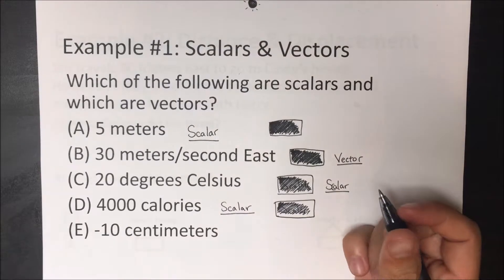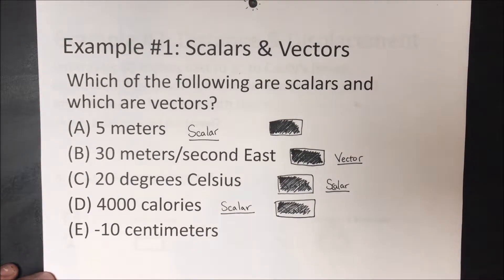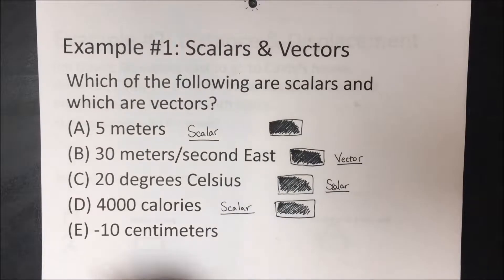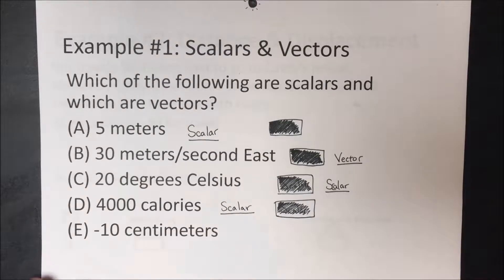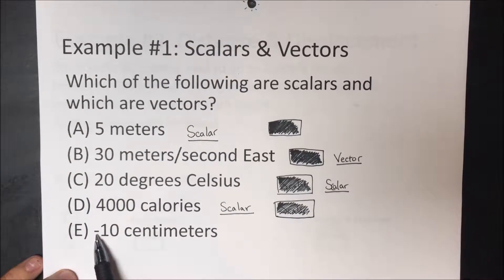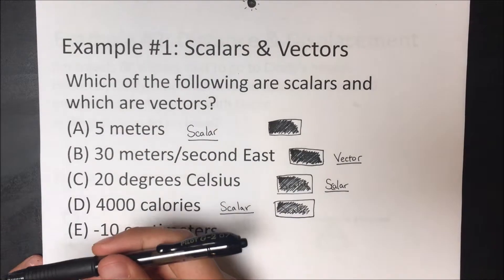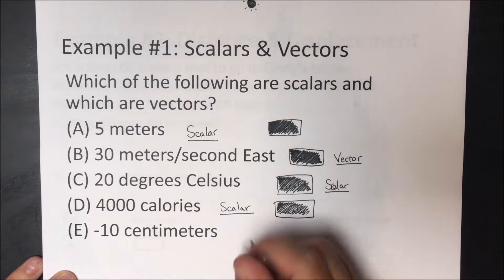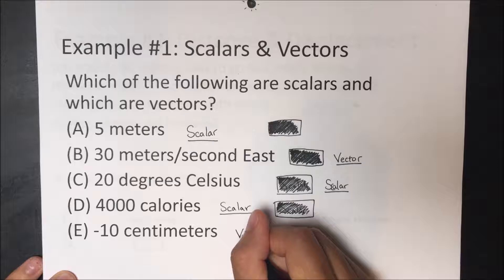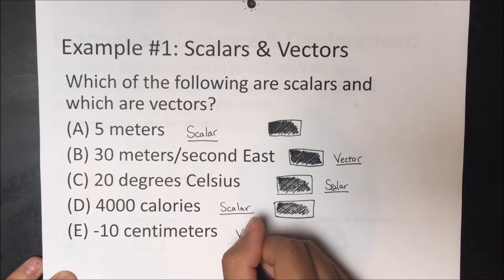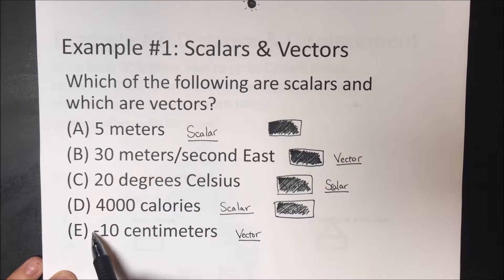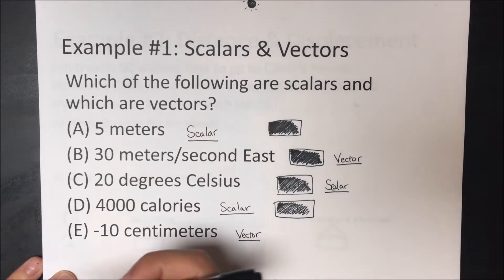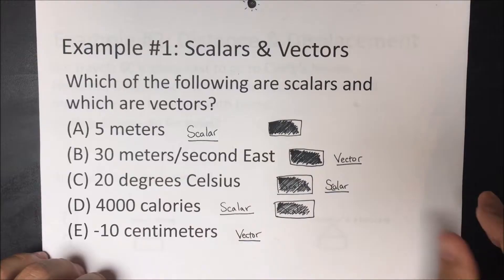This is where it becomes a little more confusing because we see negative 10 centimeters. What does this negative mean exactly? This negative implies a certain direction — it can imply going to the left, west, down, or south. So this negative implies a certain direction, and therefore it's a vector. It's important to know this because when you see a negative sign in physics, it's saying something's going left, west, down, or south.